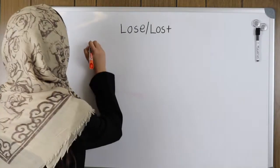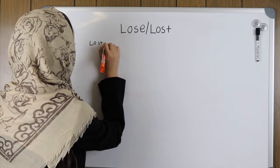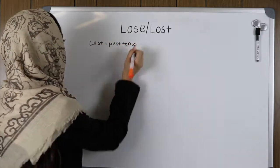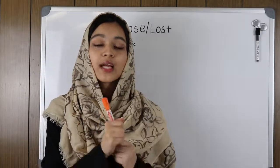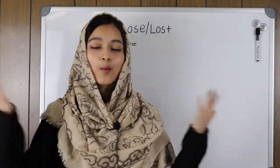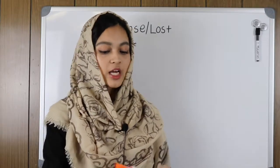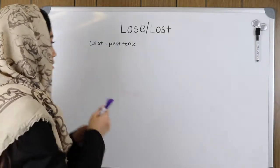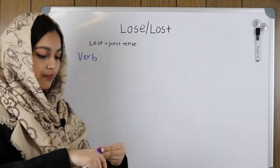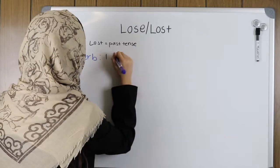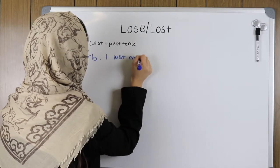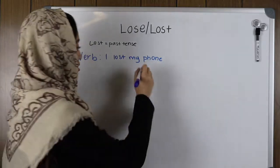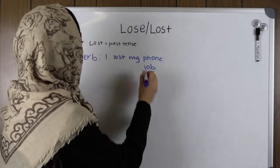'Lost' is the past tense, meaning something that already happened in the past — maybe an hour ago, a month ago, a week ago. When using 'lose' or 'lost' as a verb, you can say: I lost my phone, I lost my job, I lost my friend — and the list goes on.